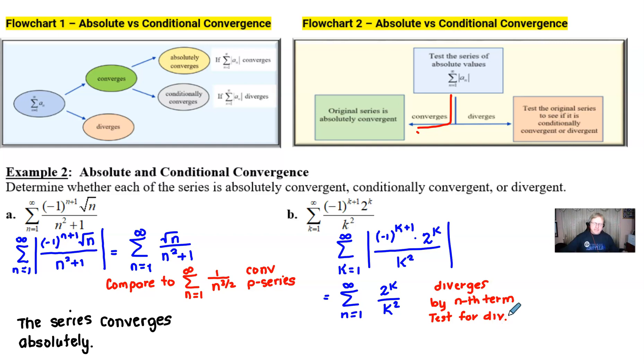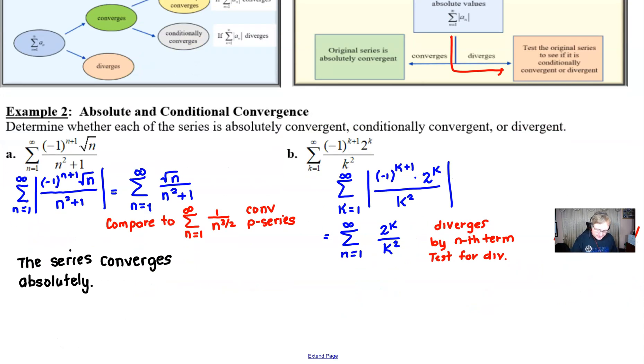All right so what does that mean if we go back up to our flowchart 2? We are traveling down this path now and that means that we test the original series to see if it's going to be conditionally convergent or if we truly will stay with this divergent behavior. We've lost absolute and that's one thing I wanted to make sure that you're aware of. We have completely lost any chance of being absolutely convergent. Game over for that.